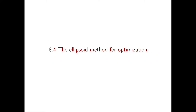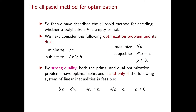In this video, we see how the ellipsoid method can be used to solve linear programming optimization problems in polynomial time. So far, we have only seen how the ellipsoid method can be used to solve in polynomial time a linear programming feasibility problem. So the first question we should ask ourselves is: can we solve an optimization problem by solving a feasibility problem? And the answer is yes.